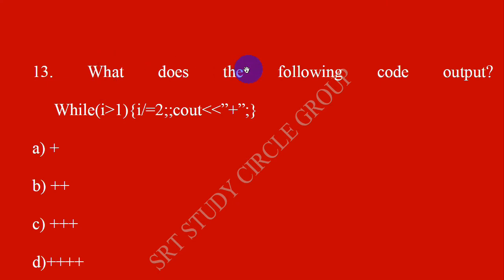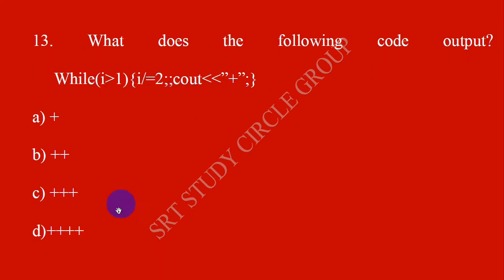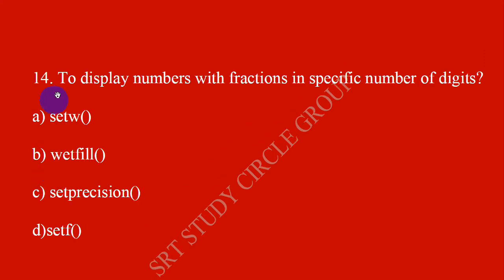What does the following code output? Using C++ with increment. This loop will produce 3 numbers. You can check this program. The answer is 14.